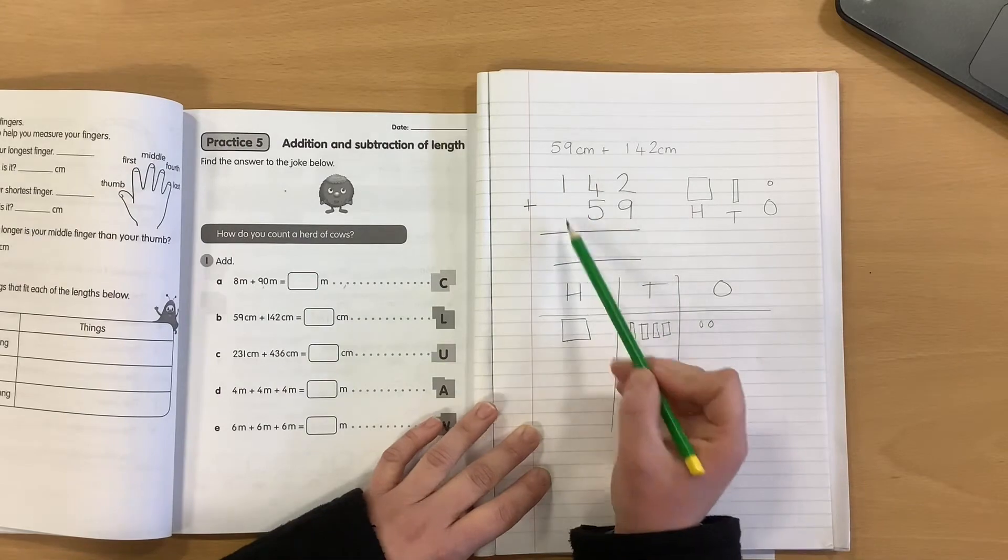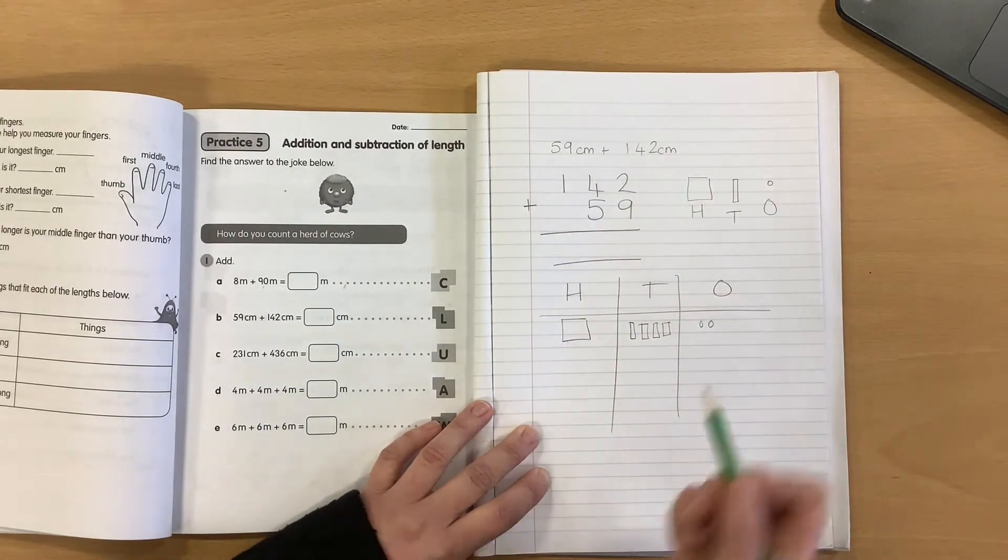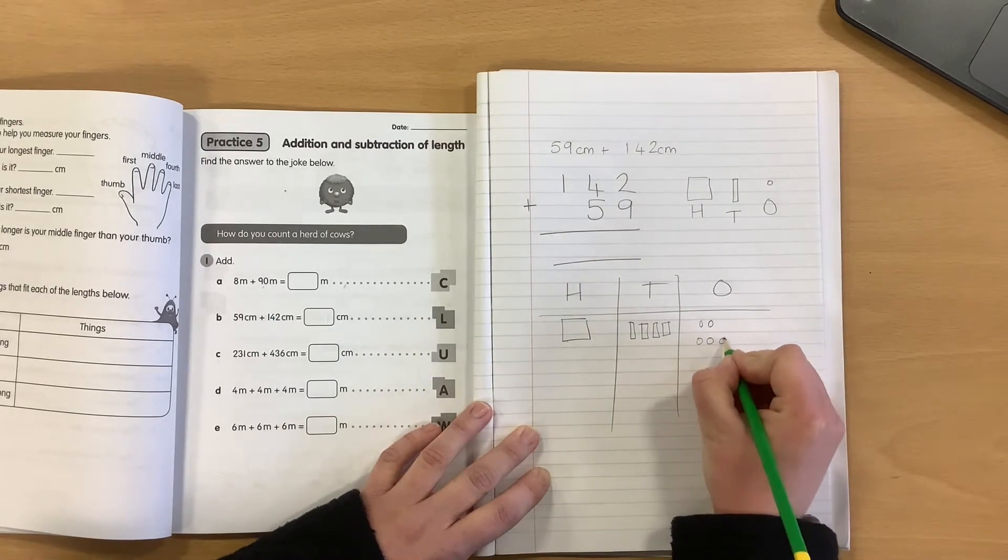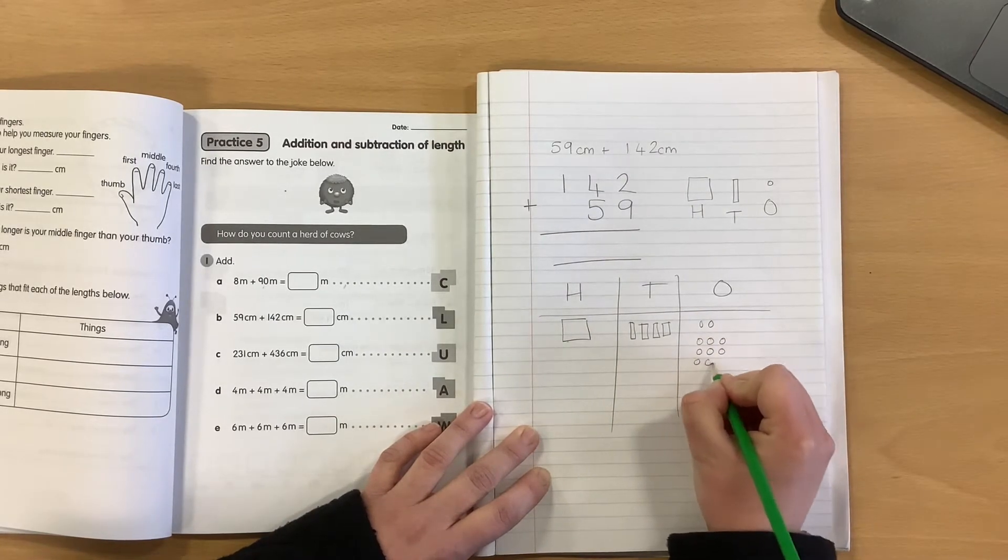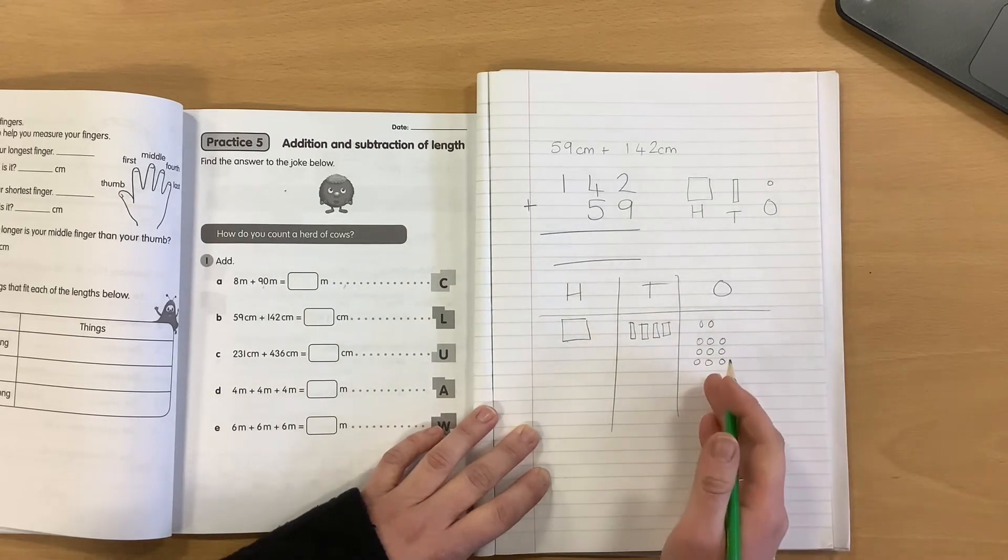I can now begin adding my 59. You always start in the smallest column, so I am going to begin by adding nine ones. Now I've added my nine ones, I can calculate my total in my ones column.